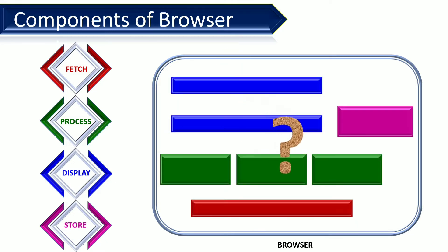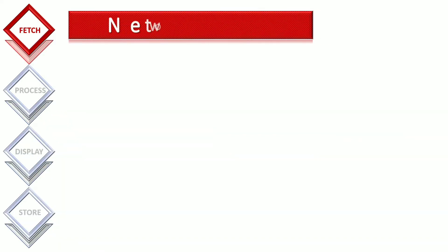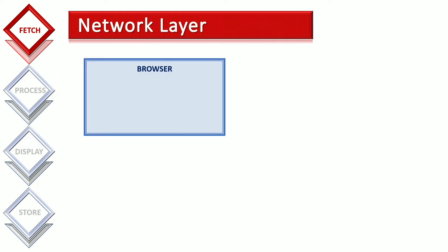There are different components in the browser which are responsible for all these operations. The network layer is responsible for fetching data from the server. The rendering engine, JavaScript engine, and UI backend are responsible for processing the data. The browser engine and user interface are responsible for displaying the processed content. The data persistence layer is responsible for storing the data to improve the performance of the browser.